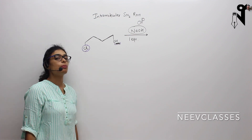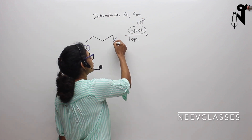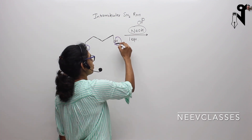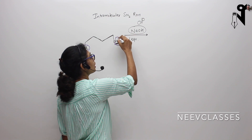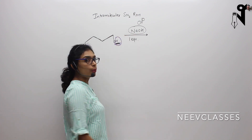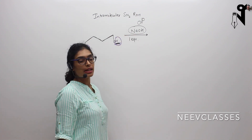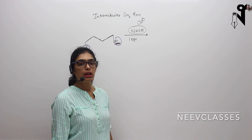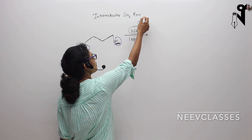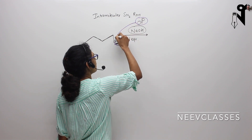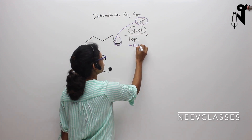What would it prefer doing? It will prefer taking this H out of the OH because that will be an acid-base reaction. And acid-base reactions are much faster than substitution reactions. So this OH- will take away this hydrogen and will form H2O.